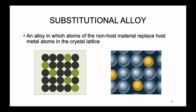So what does it look like atomically speaking to make an alloy? We're just adding trace amounts of these additional atoms into the host metal — not enough to turn it into an ionic or covalent structure, but just enough to tweak the properties. There are two different ways that we can sprinkle in these trace amounts of additional elements, and the first type of alloy that we can form is known as a substitutional alloy. This is an alloy in which atoms of the non-host material replace the host metal atoms within the crystal lattice — 'replace' is the big word here.